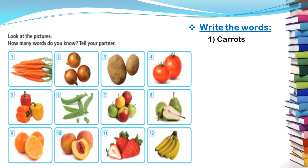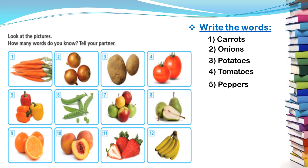Number two: onions. We cannot say onion because we have three here — onions. Number three: potatoes. Number four: tomatoes. Number five — this is the most common mistake you made. It is not pumpkin; look at the picture carefully. These are peppers. Pumpkin is something else — pumpkin means kabuya, but peppers means fulful. Please try to pay attention and be careful with your words.